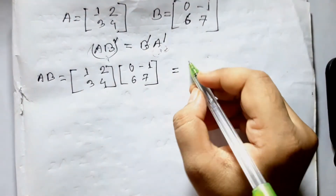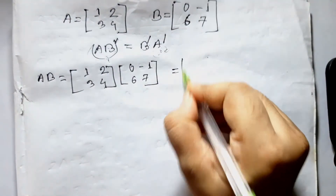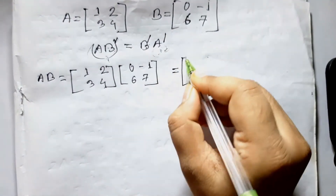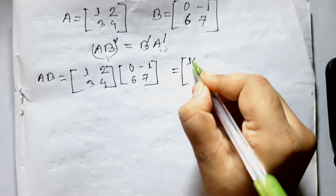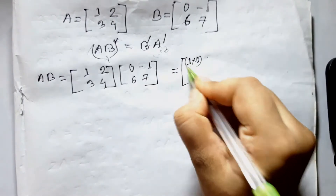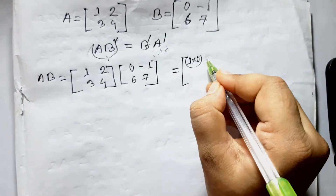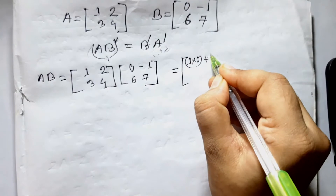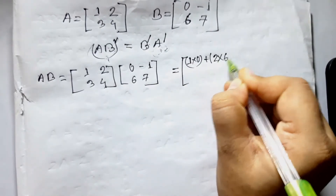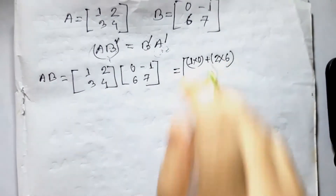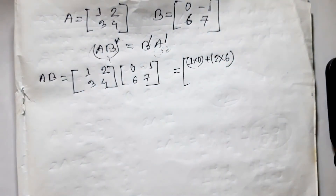We will find the problem: 1 x 0 x 0, then 2 x 2 x 6. So how do we do this?